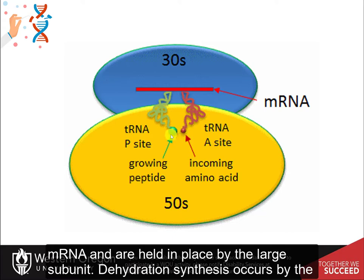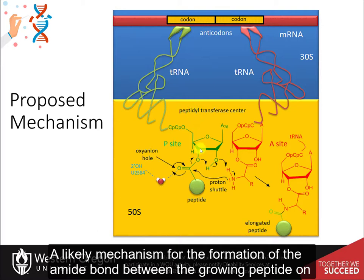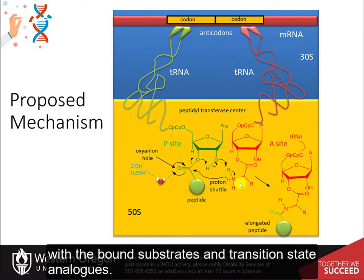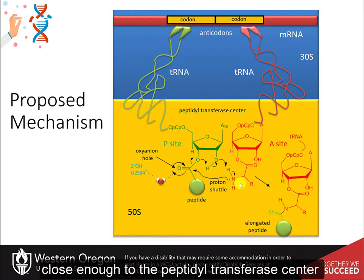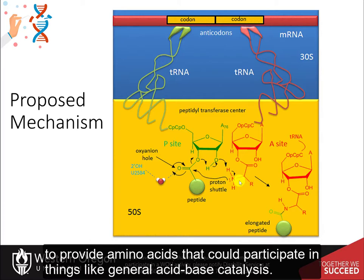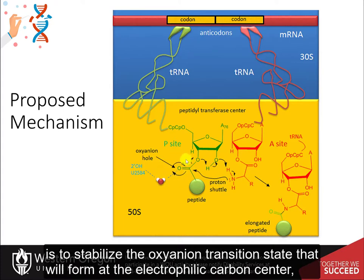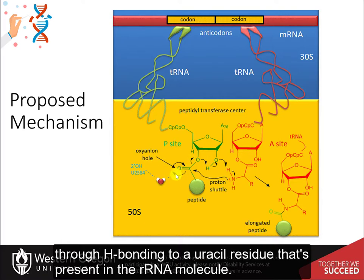Dehydration synthesis occurs by the amino acids coming into close proximity on the large subunit. A likely mechanism for the formation of the amide bond between the growing peptide on the P site and the amino acid on the A site of the ribosome has been proposed from crystal structures with bound substrates and transition state analogs. Catalysis does not involve any of the ribosomal proteins, since none is close enough to the peptidyl transferase center to participate in general acid-base catalysis. Hence, the rRNA must act as the enzyme, and the most likely mechanism to stabilize the oxyanion transition state at the electrophilic carbon center is a precisely located water molecule, positioned at the oxyanion hole through hydrogen bonding to a uracil residue in the rRNA.